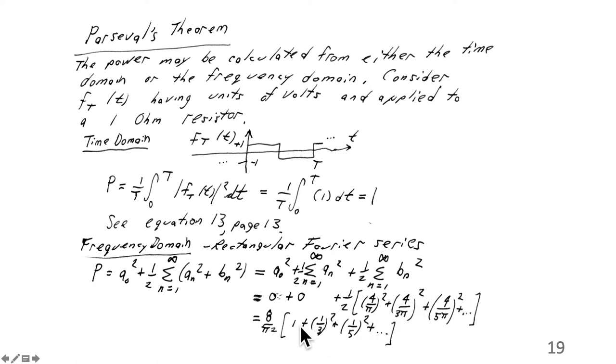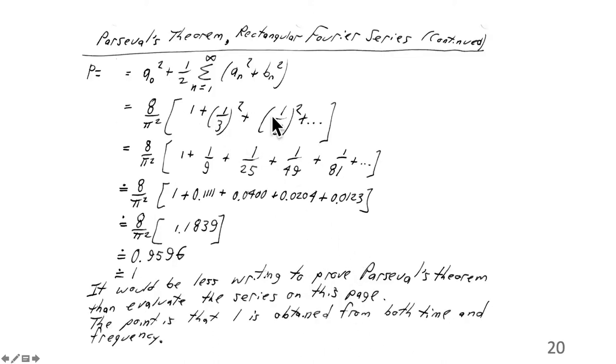Then 1 over 3 squared is here, 1 over 5 squared is here, and so on. So it's 8 over pi squared, 1 plus 1 over 3 squared, plus 1 over 5 squared. And so continuing, showing more terms in that series, it would be 1 over 1 plus 1 over 9 plus 1 over 25 plus 1 over 49 plus 1 over 81.